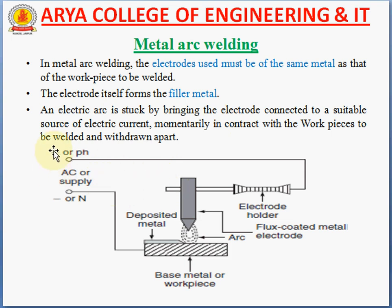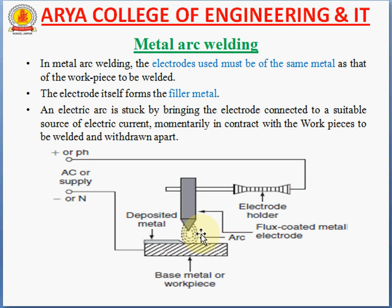In this diagram, we have the supply — positive or negative if DC, or phase and neutral if AC. The neutral is connected to the base metal and the phase is connected directly to the electrode holder. The electrode is connected to the electrode holder and brought momentarily into contact. When the supply is started, arcs are produced in the metal. The arc is struck by bringing the electrode connected to a suitable source of current, welding with the help of a flux-coated metal electrode.